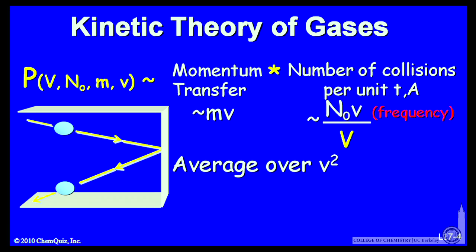So let's take the product of those two to an average over the velocities. When we do that, we get an expression for the pressure that looks like this: the number of particles, the mass, their velocities, three times the volume.